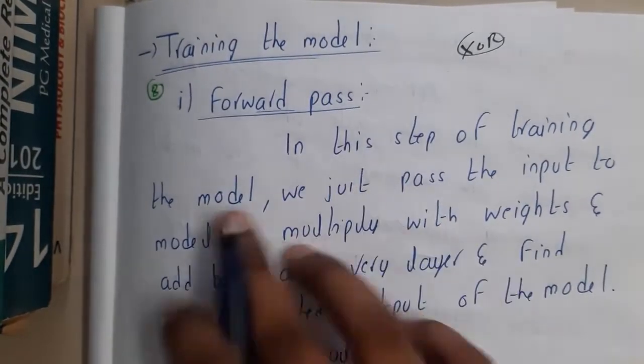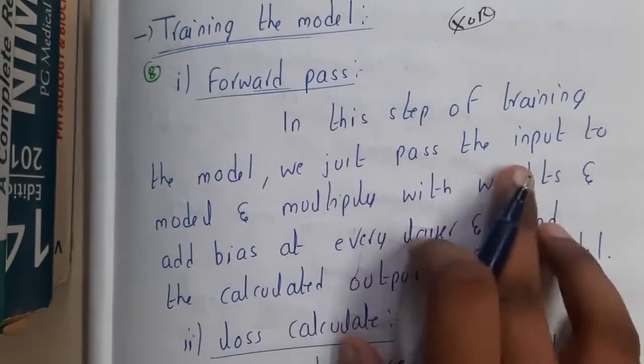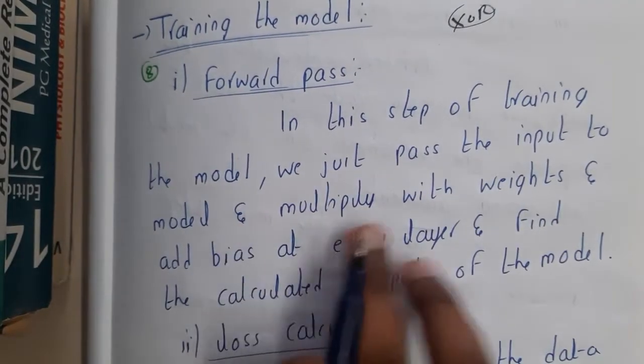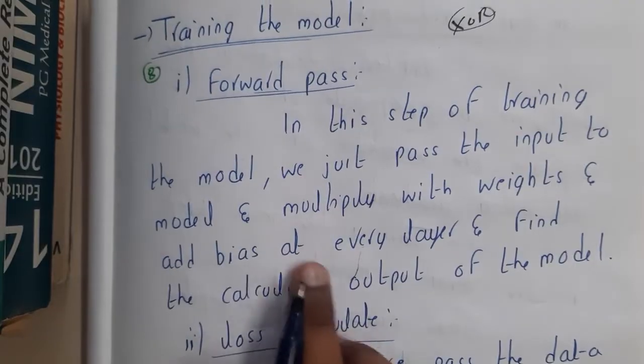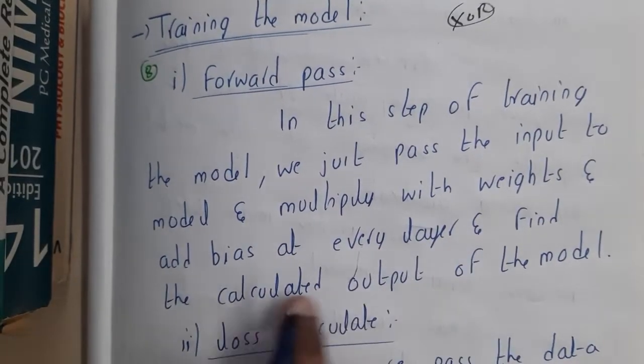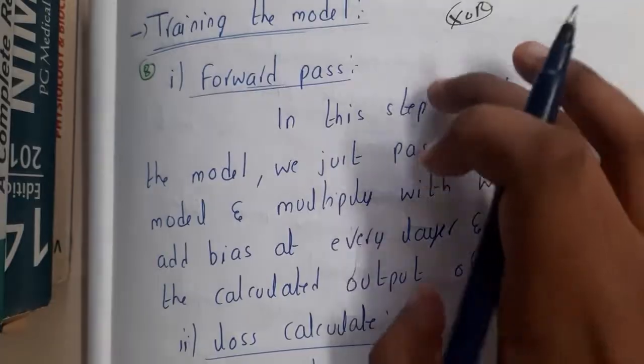Forward pass: in this step of training the model, we just pass the inputs to the model and multiply with the weights and add bias at every layer and find the calculated output of the model. So we are doing forward pass, we are passing our values, and calculating the values at those points.